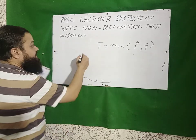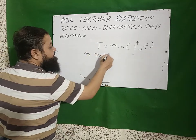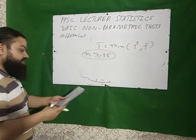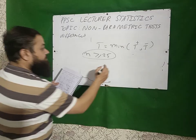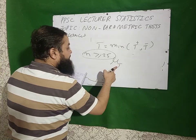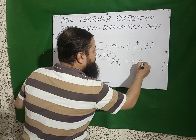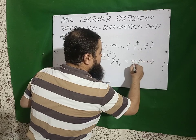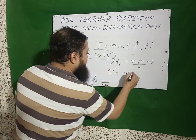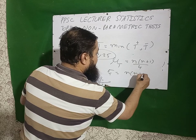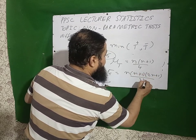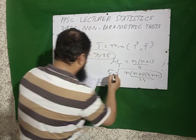When n ≥ 25, the Wilcoxon Signed Rank Test is normally approximated. The mean μT = n(n+1)/4 and the standard deviation σT = √[n(n+1)(2n+1)/24].